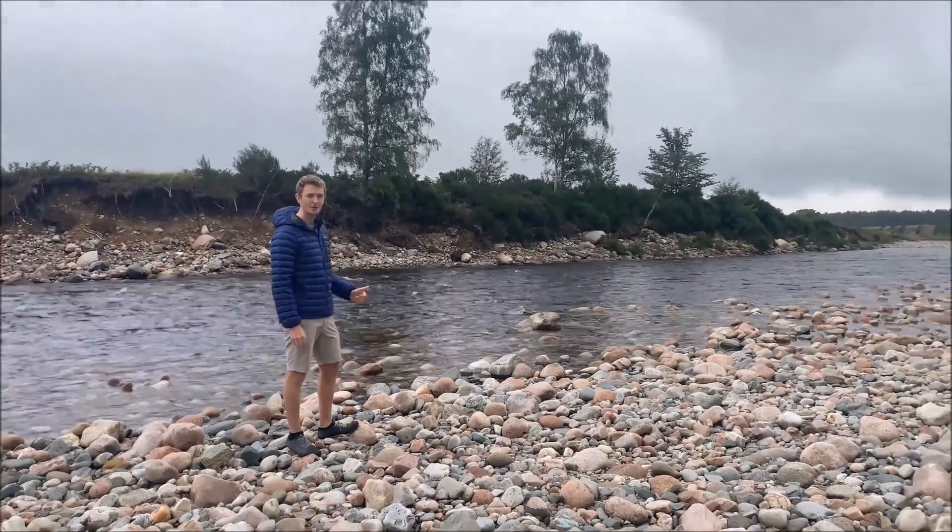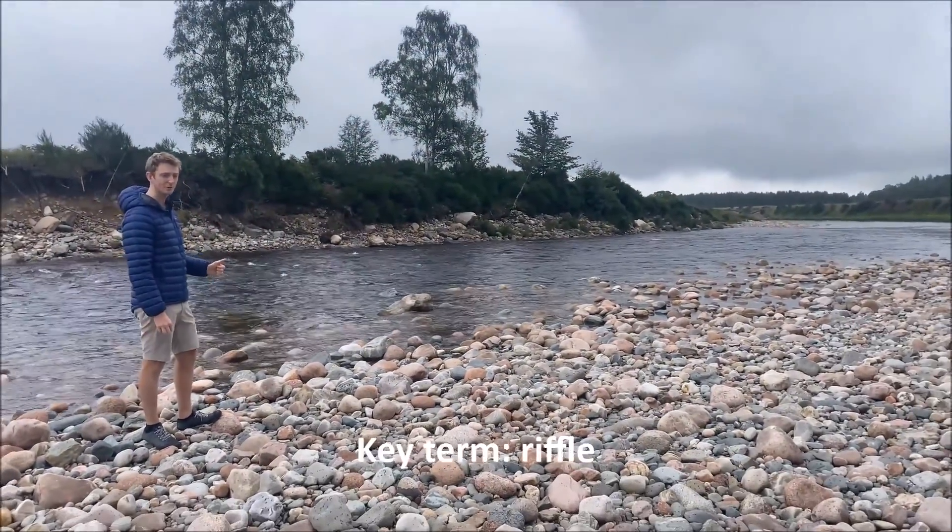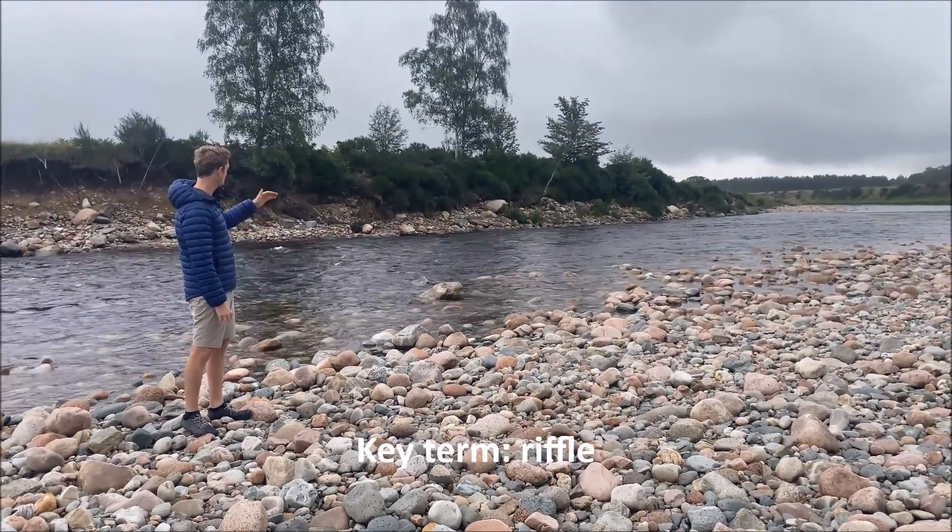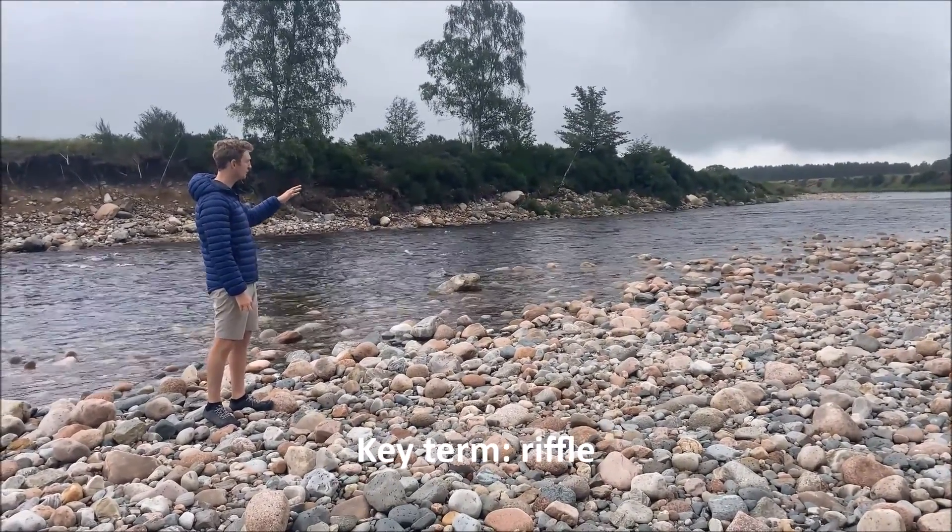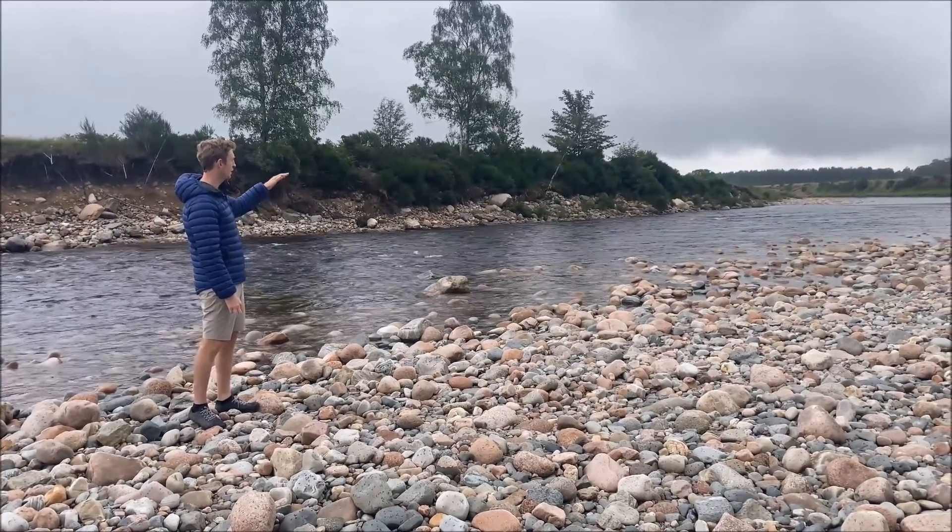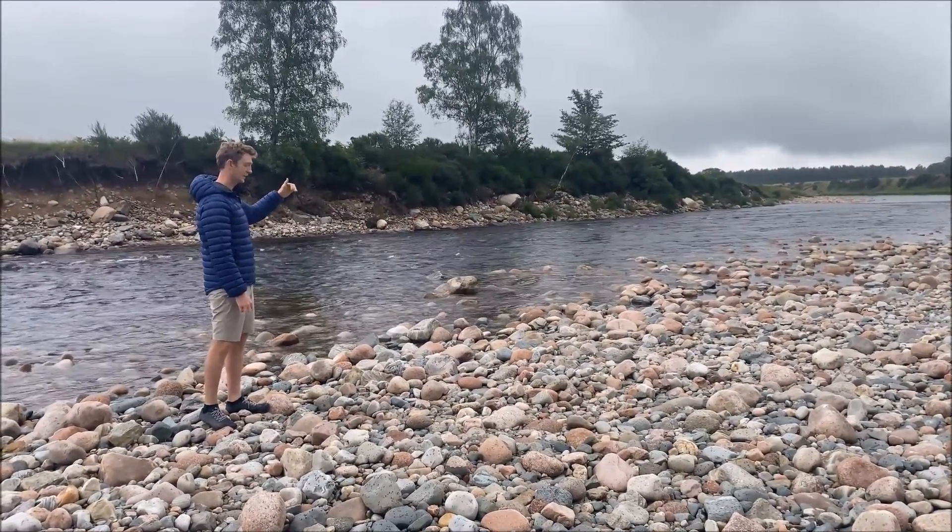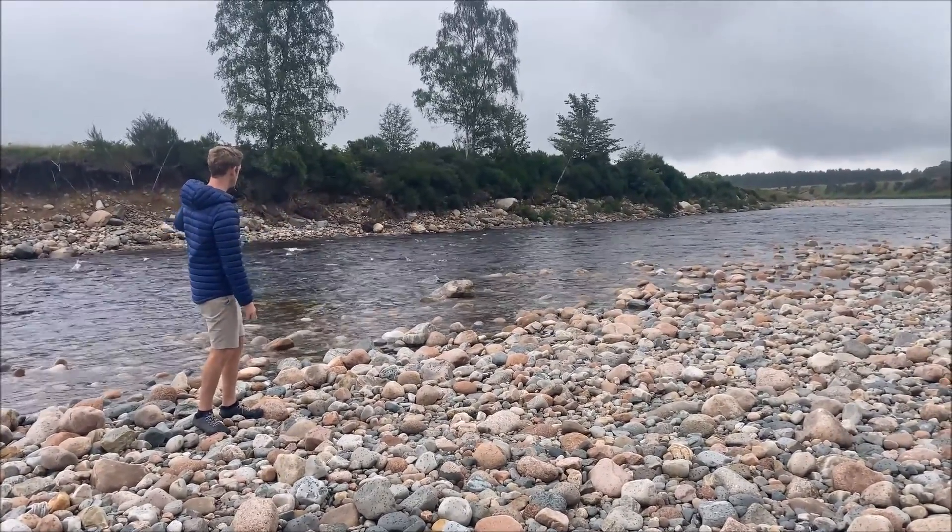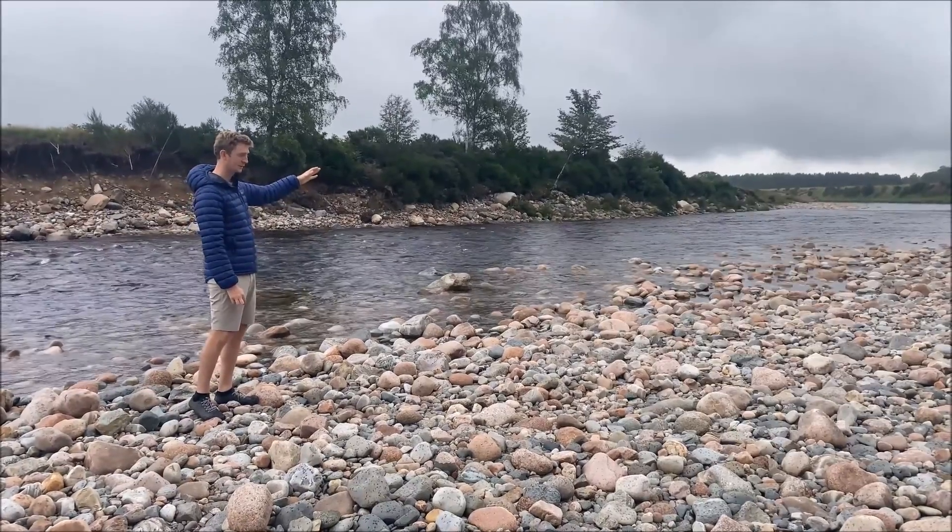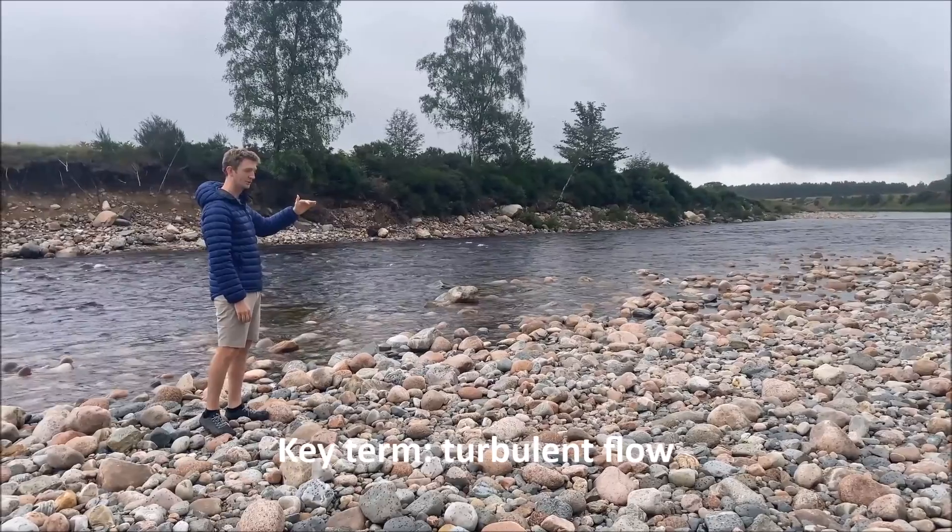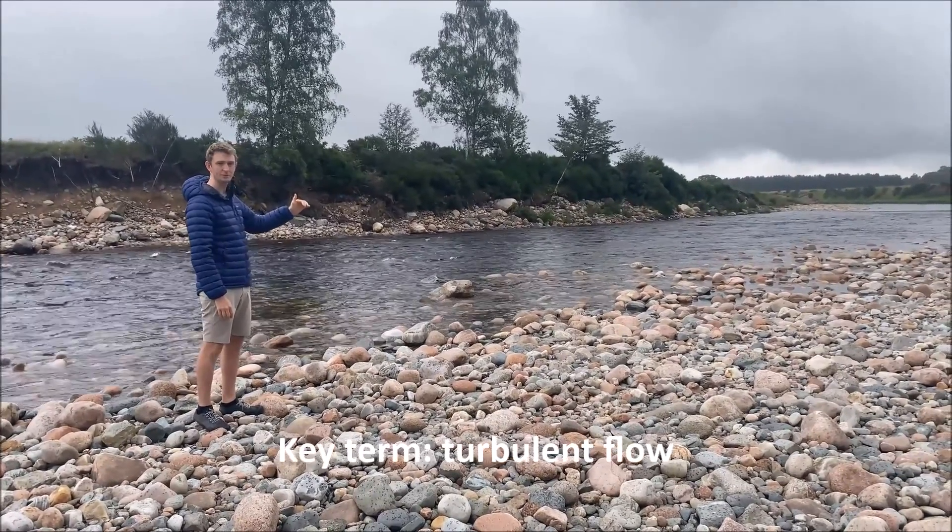Another A-level term is 'riffle.' A riffle is found between meanders—a section where we get a little bit of rough flow where the river speed decreases. Some of the eroded material is deposited because the flow isn't as fast in that straighter section, causing slightly more turbulent flow.